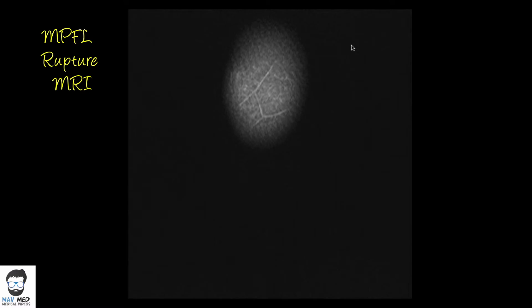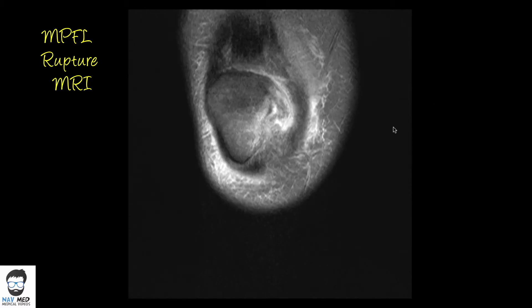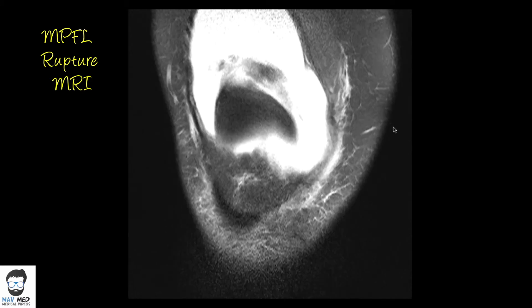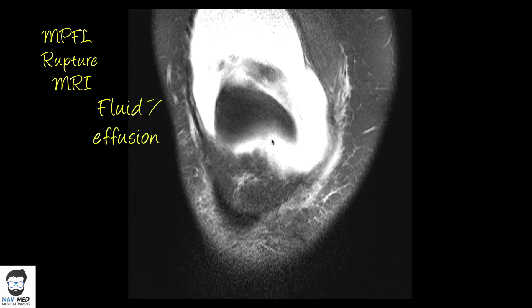Welcome to another lecture. This is another video where we're looking at an MRI of the knee — it's going to be a quick description. As we scroll down, we can see this MRI of the knee. Coming to the beginning of the MRI, the first pictures on the screen immediately show a large amount of fluid around the knee — that's an effusion, which is usually an indication of some kind of trauma or injury.